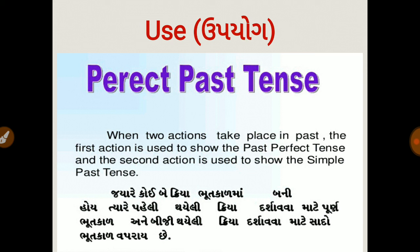પૂર્ણ ભૂતકાળ (past perfect) નો ઉપયોગ: જ્યારે ભૂતકાળમાં જે ક્રિયા પૂર્ણ થઈ ગઈ હોય અને તેની અસર ન હોય ત્યારે. બીજો ઉપયોગ: જ્યારે ભૂતકાળમાં બે ક્રિયા બની હોય, ત્યારે જે પ્રથમ ક્રિયા હોય તે પૂર્ણ ભૂતકાળ (past perfect) માં અને બીજી ક્રિયા સાદા ભૂતકાળ (simple past) માં દર્શાવાય. When two actions take place in the past, the first action is shown in the past perfect tense and the second action is shown in the simple past.